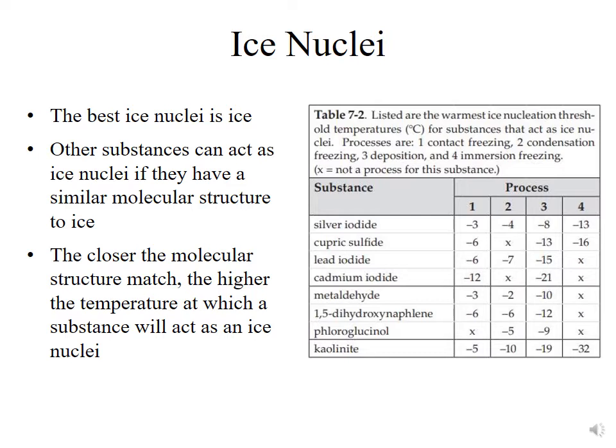Determining the ice nucleating capability of individual species is extremely difficult because you have to have a very clean lab setup so that you're not contaminating it with other species. The takeaway message is that the closer the molecular structure match, the higher the temperature at which a substance will act as an ice nuclei.